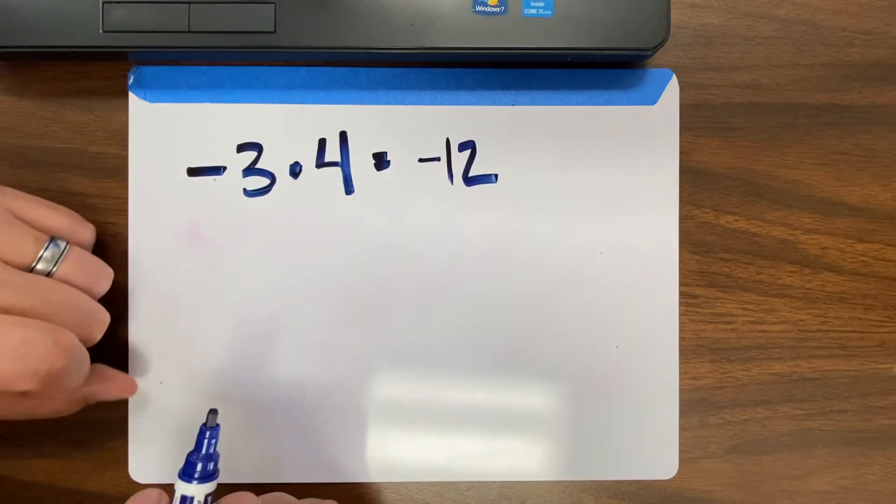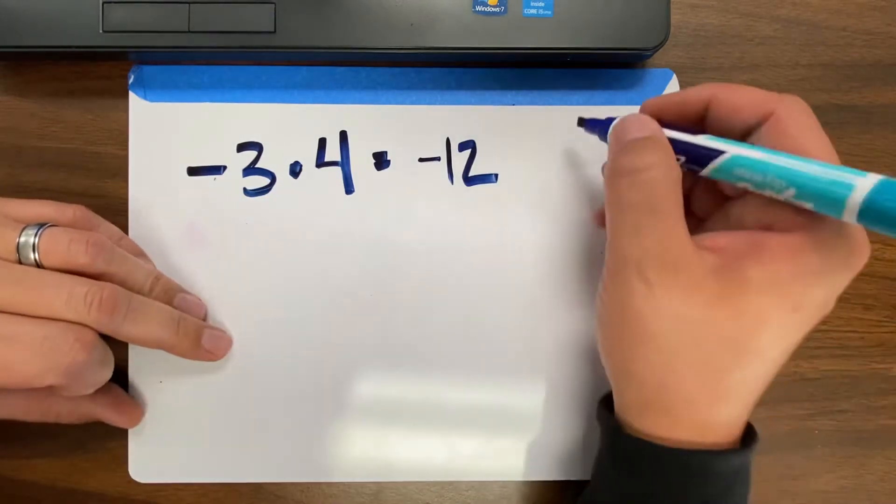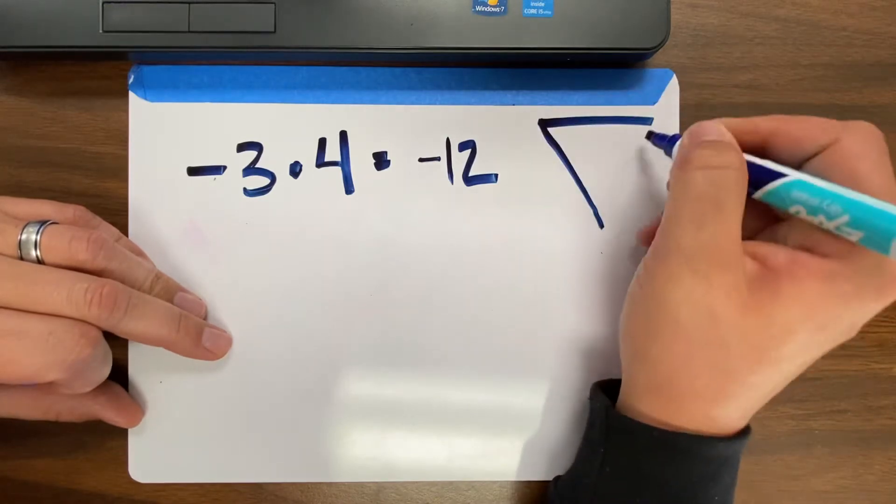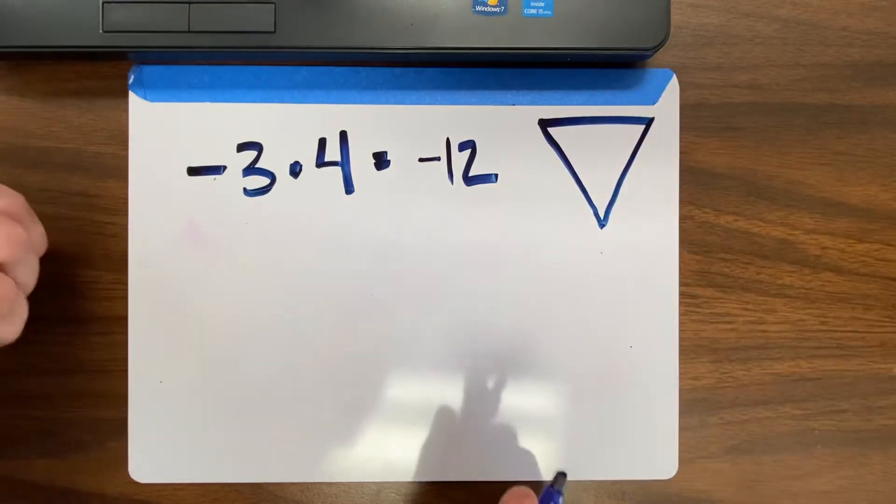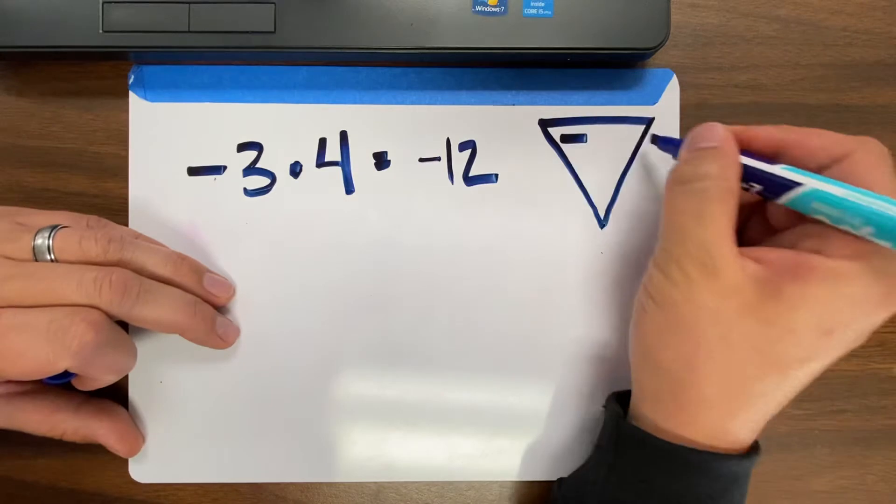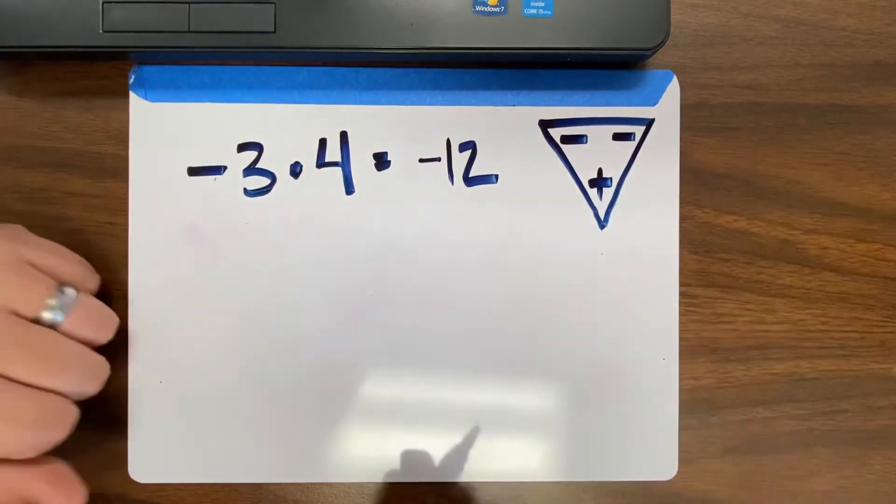The trick for always remembering when you're dealing with two numbers is draw a triangle. Now remember, this only works with multiply and divide. And you put a minus, a minus, and a plus. Always that.